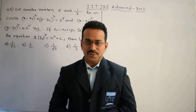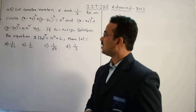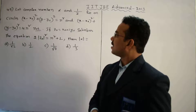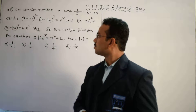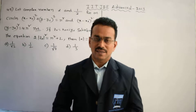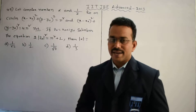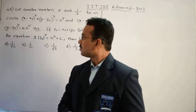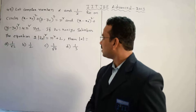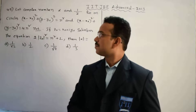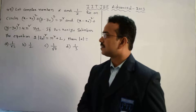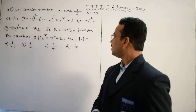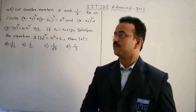Let's discuss the solution of the given question. The question is: let complex numbers α and 1/ᾱ lie on circles (x - x₀)² + (y - y₀)² = r² and (x - x₀)² + (y - y₀)² = 4r² respectively. If z₀ = x₀ + iy₀ satisfies the equation 2|z₀|² = r² + 2, then |α| equals how much?